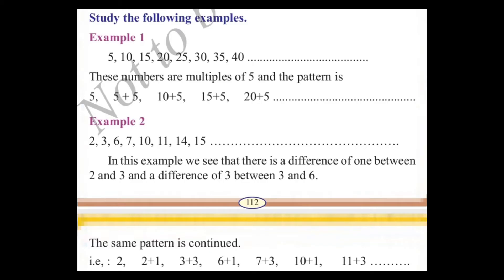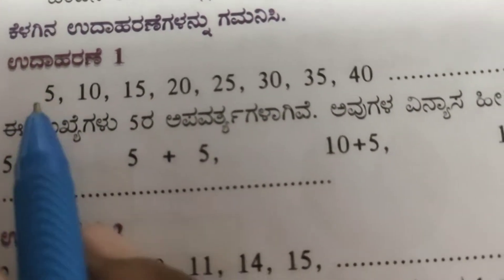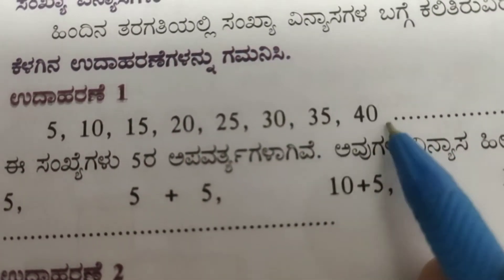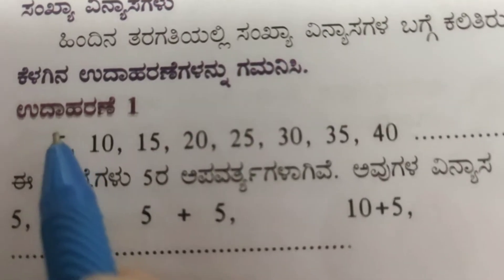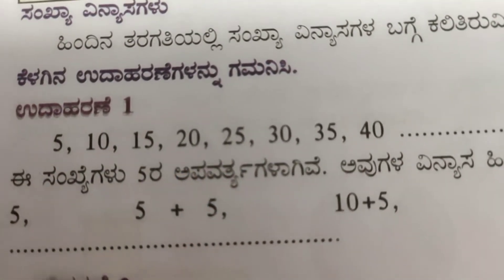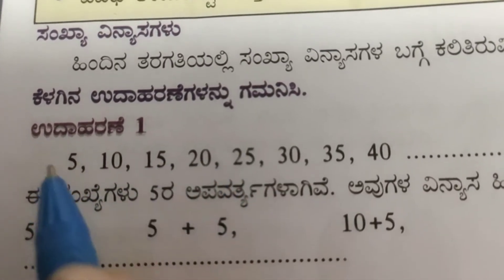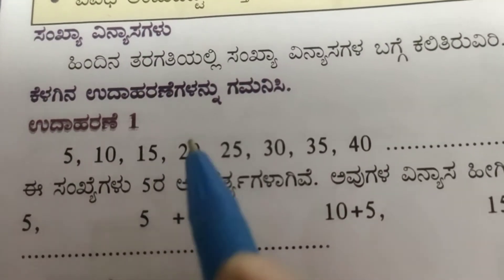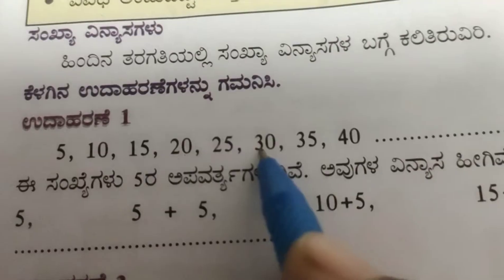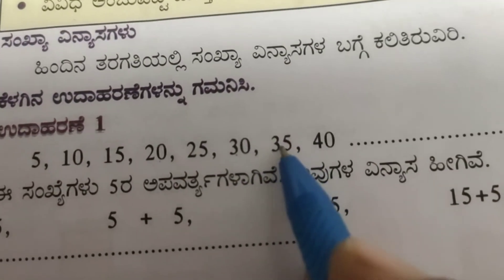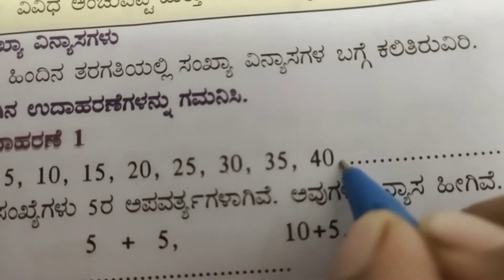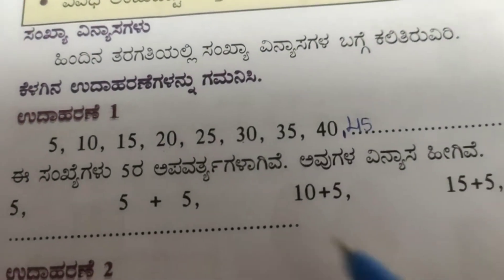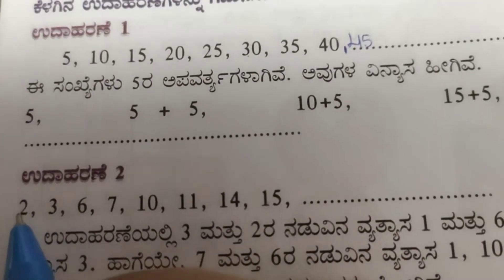Let us observe some examples. First pattern: 5, 10, 15, 20, 25, 30, 35, 40. These are 5 times tables. The pattern is: 5 plus 5 is 10, 10 plus 5 is 15, 15 plus 5 is 20, 20 plus 5 is 25, 25 plus 5 is 30, 30 plus 5 is 35, 35 plus 5 is 40. The next number will be 40 plus 5 is 45. This is how the pattern continues.